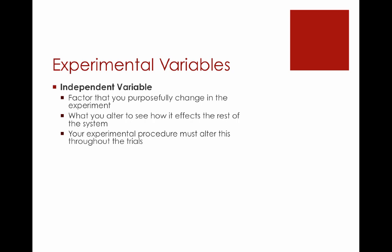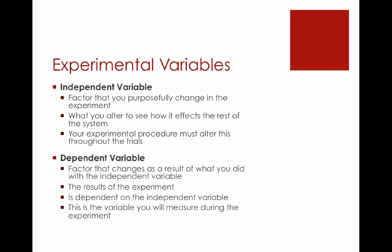Connected to the independent variable is the dependent variable. This is the factor that you allow to change as a result of what you did with the independent variable. Another way of thinking about your dependent variable is it's simply the results of the experiment. When I do stuff up here to my independent variable, it has an impact down here on my dependent variable. The dependent variable is dependent on the independent variable. This is the variable you'll be measuring throughout the entire experiment.